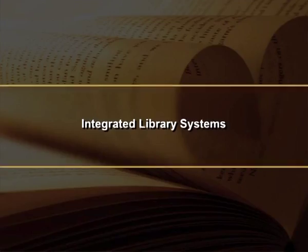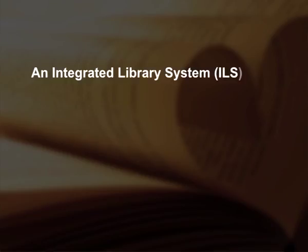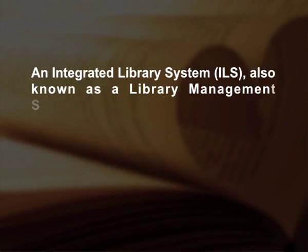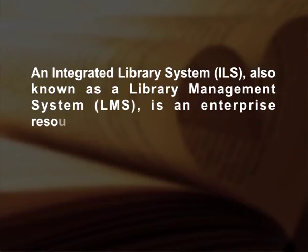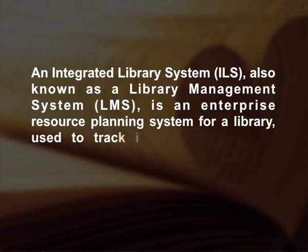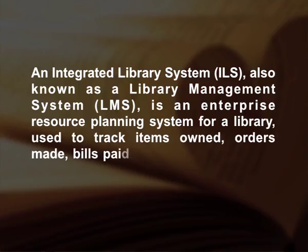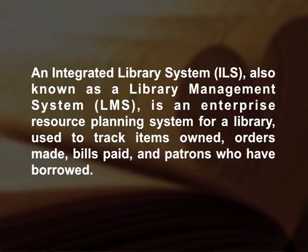Integrated Library Systems: an Integrated Library System (ILS), also known as a Library Management System (LMS), is an enterprise resource planning system for a library, used to track items owned, orders made, bills paid, and patrons who have borrowed. An ILS usually comprises a relational database, software to interact with that database, and two graphical user interfaces — one for library users and one for library professionals. Most ILS separate software functions into discrete programs called modules, which are then integrated into a unified interface.